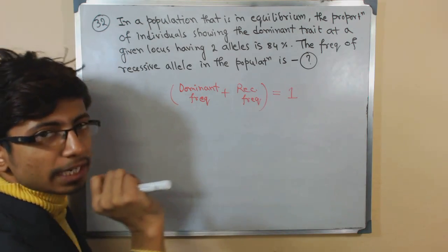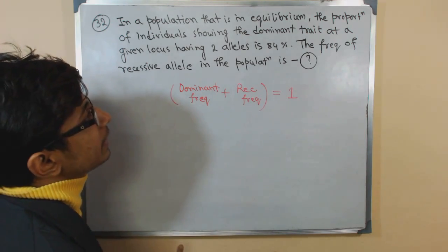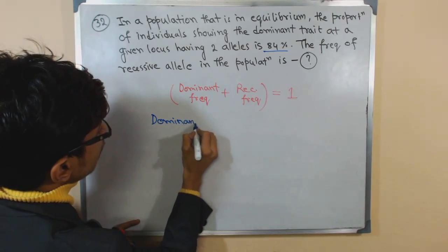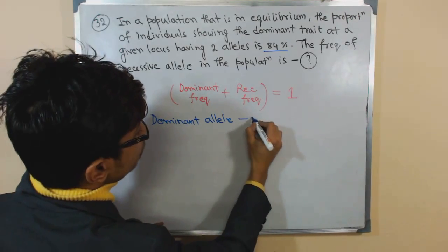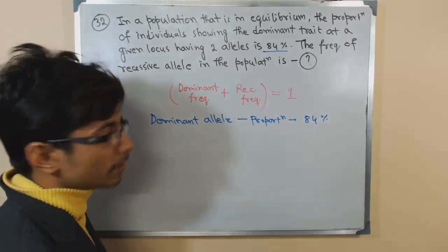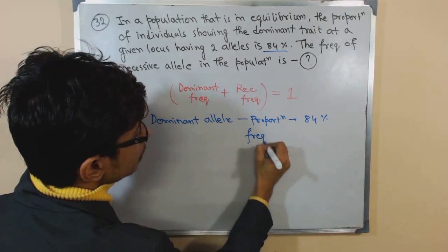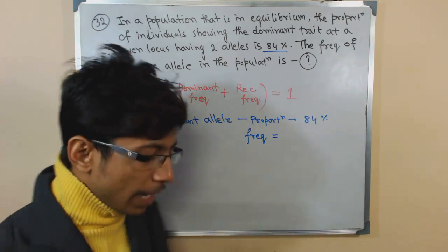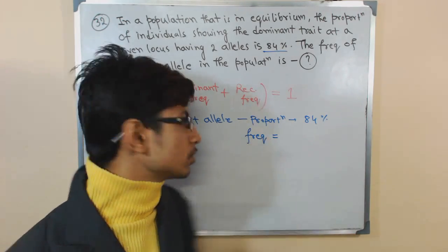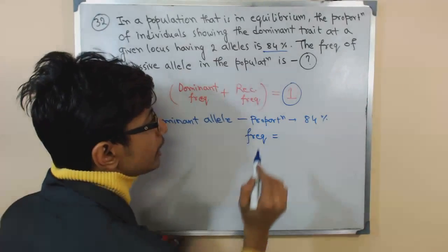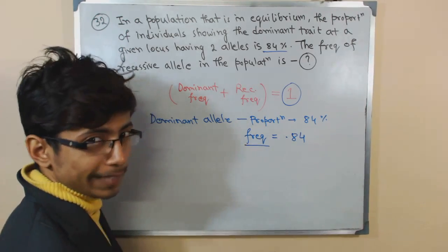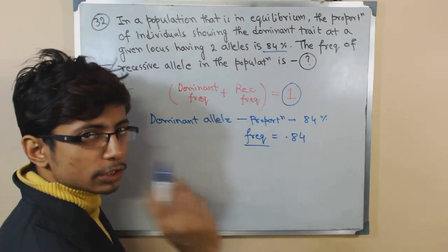In this case, what we know is that the individuals showing the dominant trait at a given locus having two alleles have a frequency of 84%. So the proportion is 84%, which means in a population of 100 individuals, 84 will have this dominant allele. Converting to a decimal, 84% becomes 0.84 — this is the frequency for the dominant allele.